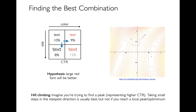An analogy people make is to imagine you're climbing in some mountains. You can see there's an x and y representing the space of things I'm exploring — maybe one axis is color from black to red with all kinds of shades in between, and maybe the other axis is the size. And how high I am — like if I'm at the top of a peak — can represent the click-through rate. So reaching a peak represents a really high click-through rate.